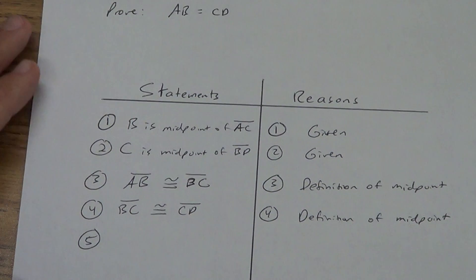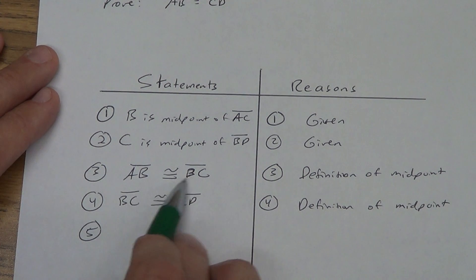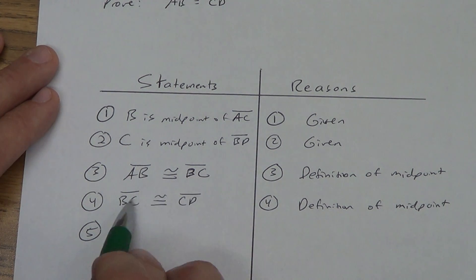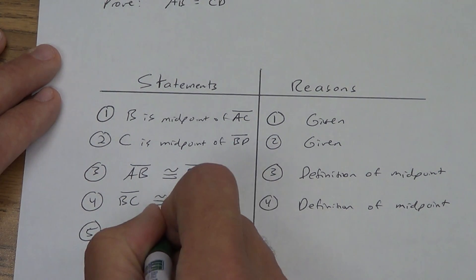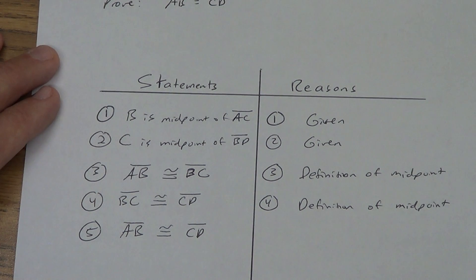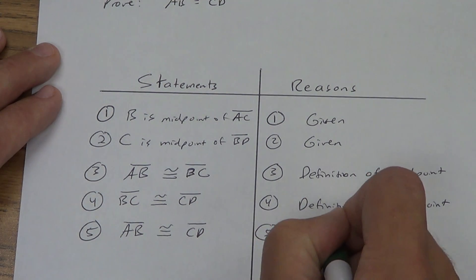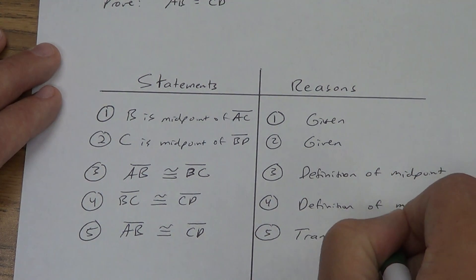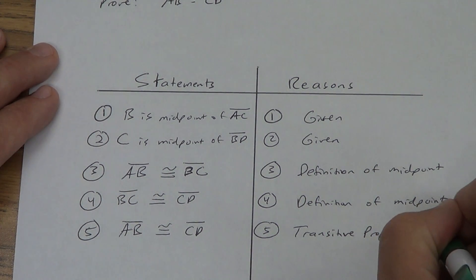Now we're actually going to apply something from this lesson. What do you see here? Same thing — it's in the middle. AB to BC, BC to CD — skip the middle: AB to CD. Now, what tells us we're allowed to skip the middle? You've got to get this one memorized — it's a really important one. Skipping the middle is transitive. Transitive property — sometimes we abbreviate: 'prop' for 'property of.' Don't put equality — look at what we have right here: transitive property of congruence.